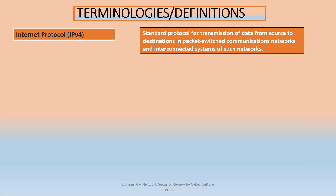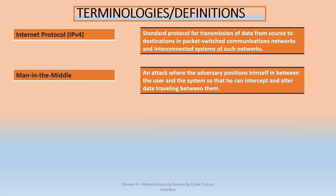Internet Protocol version 4 (IPv4) is a standard protocol for transmitting data from source to destination in a packet-switched communication network. Internet Protocol is what you use to transmit data on the internet, and that is why we have Internet Protocol addresses.